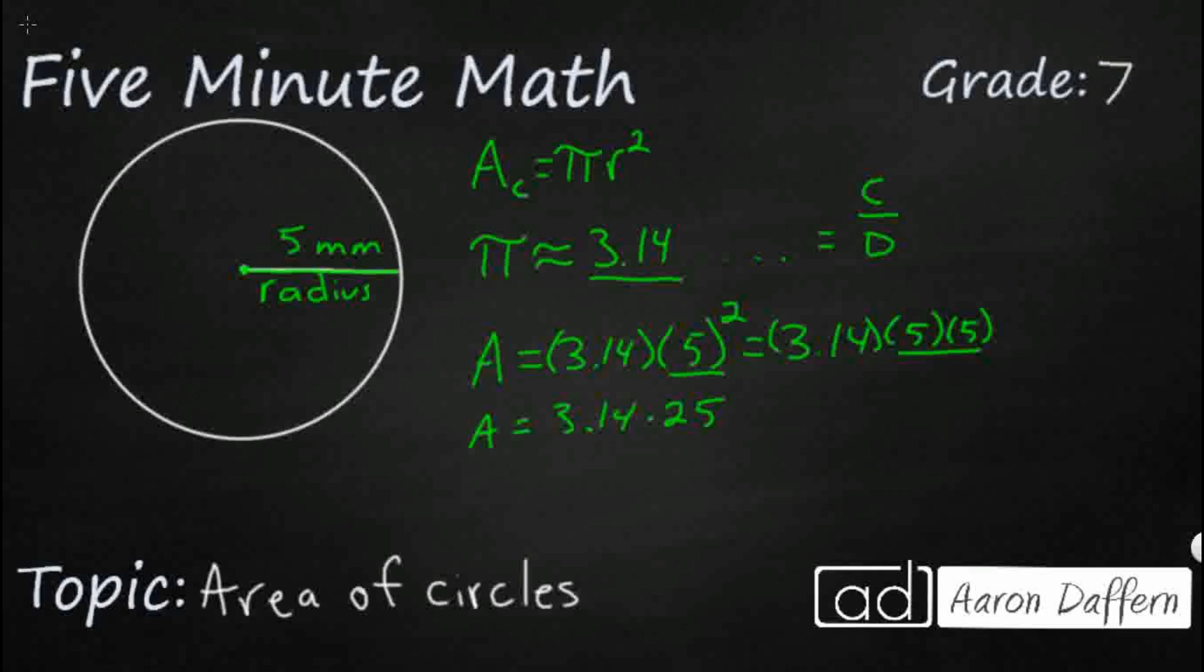So really, we're looking at 3.14 times 25. And if we do that, we have got our area. It's an estimate, right? If you just want to do a real quick estimate, it's going to be 75 because 25 times 3 is 75. But you could pull out your calculator and get the actual answer if you want to. Normally, it's going to say something like round it to the first two digits or to the hundredths place because obviously 3.14 is just an approximation of pi.